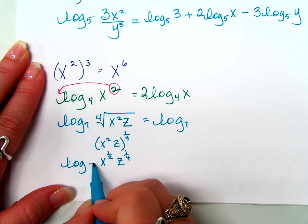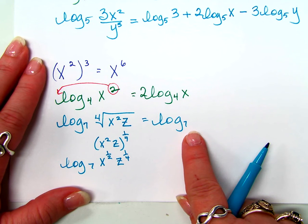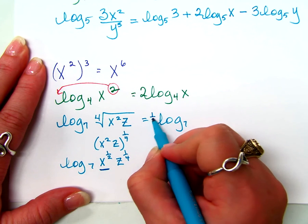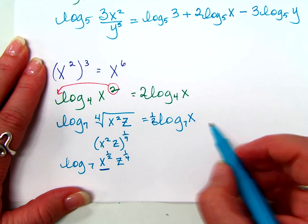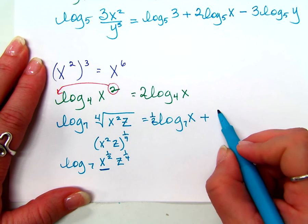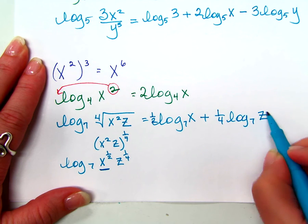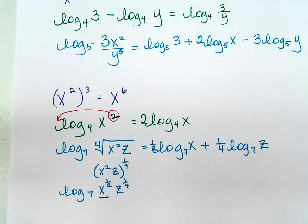So, what do I write? I've got to deal with this term first. So, one-half log base 7 of x. Good. Plus? One-fourth log base 7 of z. Very good. I mean, I can try really hard to make them harder. I would have to try really hard to make them harder. You see what I'm saying? What am I trying to say to you about your work that I need you to do today? It's like, it's stuff like this.